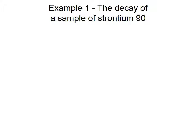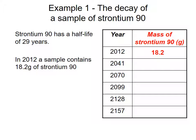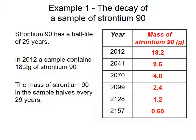So let's now look at an example of a radioactive half-life, a decay of a sample of strontium-90. So strontium-90 has a half-life of 29 years. In 2012, a sample contains 18.2 grams of strontium-90. By 2041, that would have halved to 9.6 grams of strontium-90. In 2070, 4.8 grams. In 2099, 2.4 grams. In 2128, 1.2 grams. And by 2157, only 0.6 grams of strontium-90. So the mass of strontium is basically halving every 29 years. And it's being transformed into another stabler isotope.